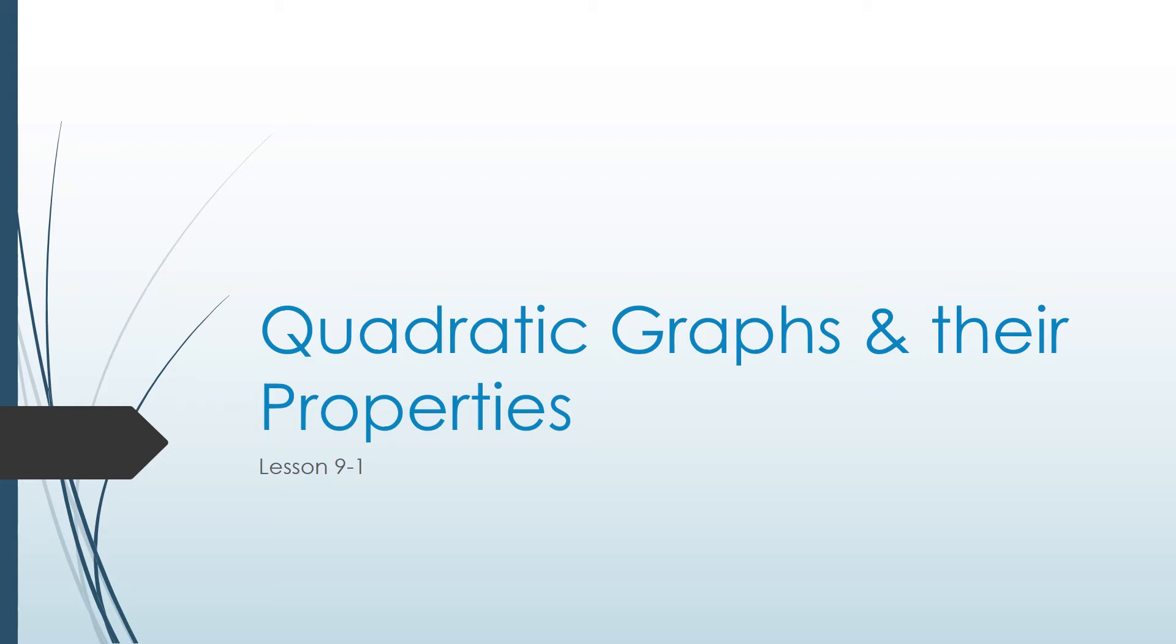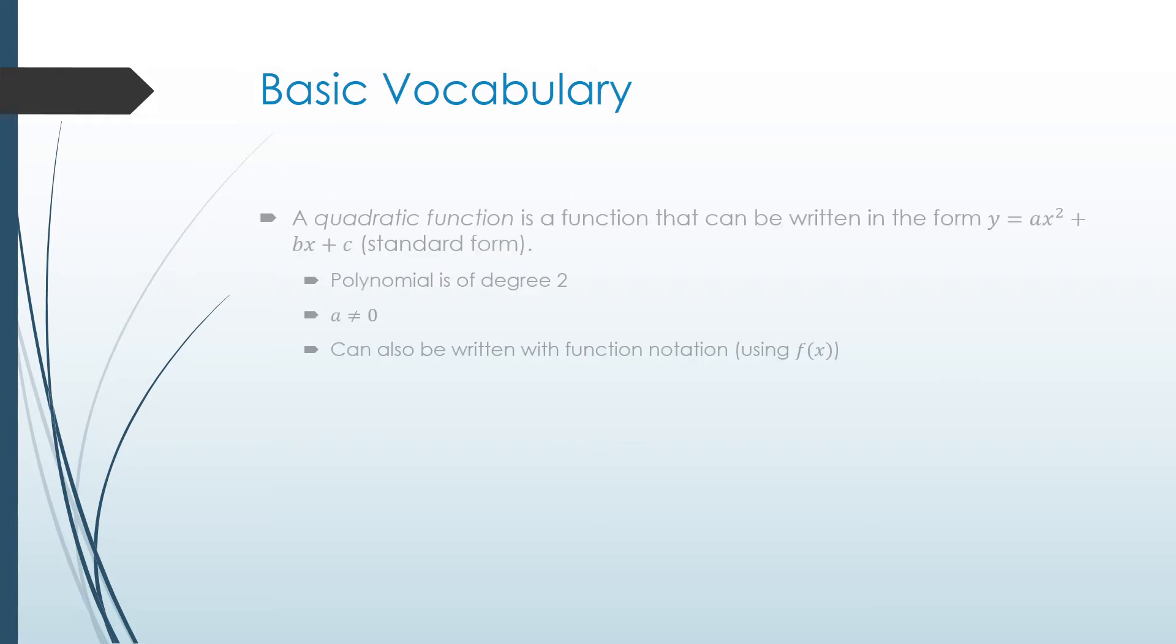This is lesson 9-1, quadratic graphs and their properties. Let's review some basic vocabulary for a quadratic function. First, a quadratic function is a function that can be written in the form y equals ax squared plus bx plus c. This is also standard form of a quadratic equation. The polynomial is of degree 2, the value of a in the function cannot be equal to 0, and we can also use function notation, meaning we can use f of x instead of using y.